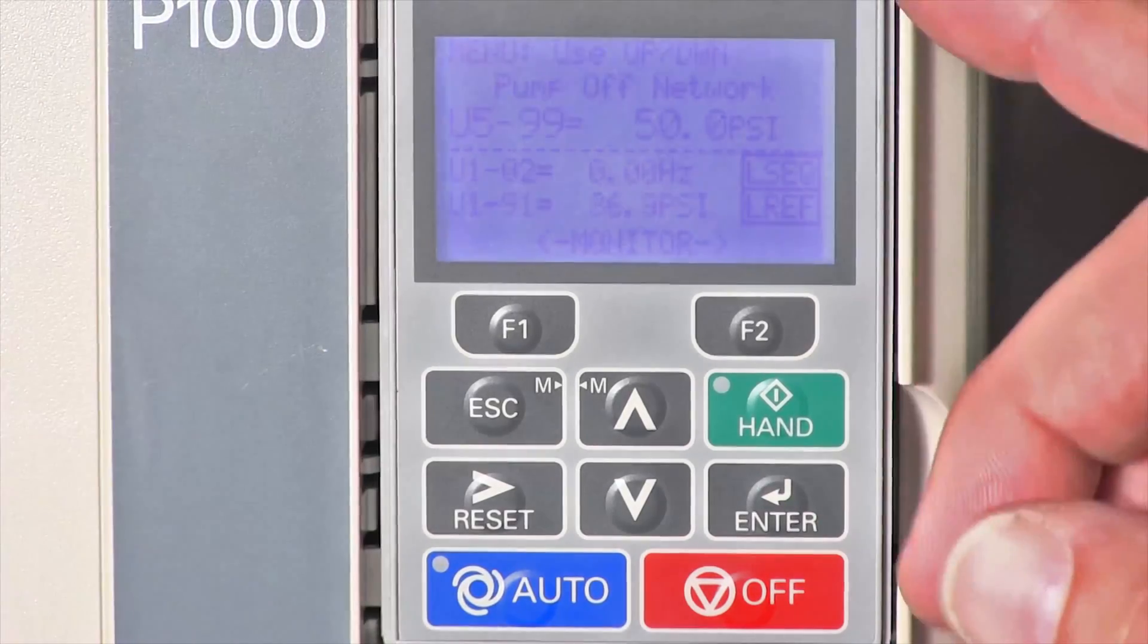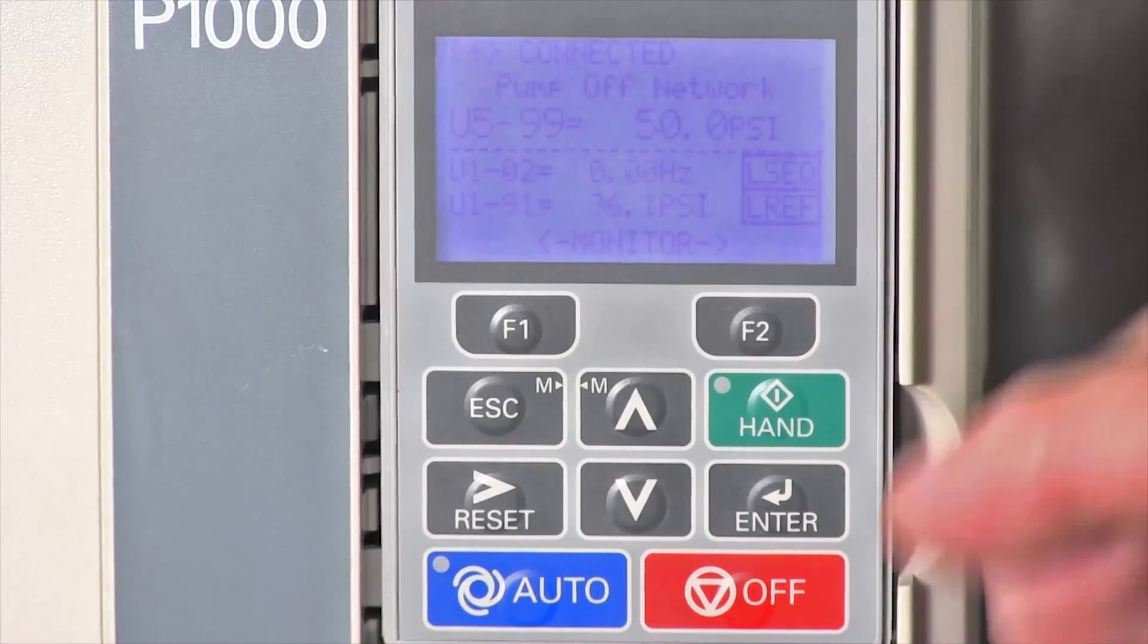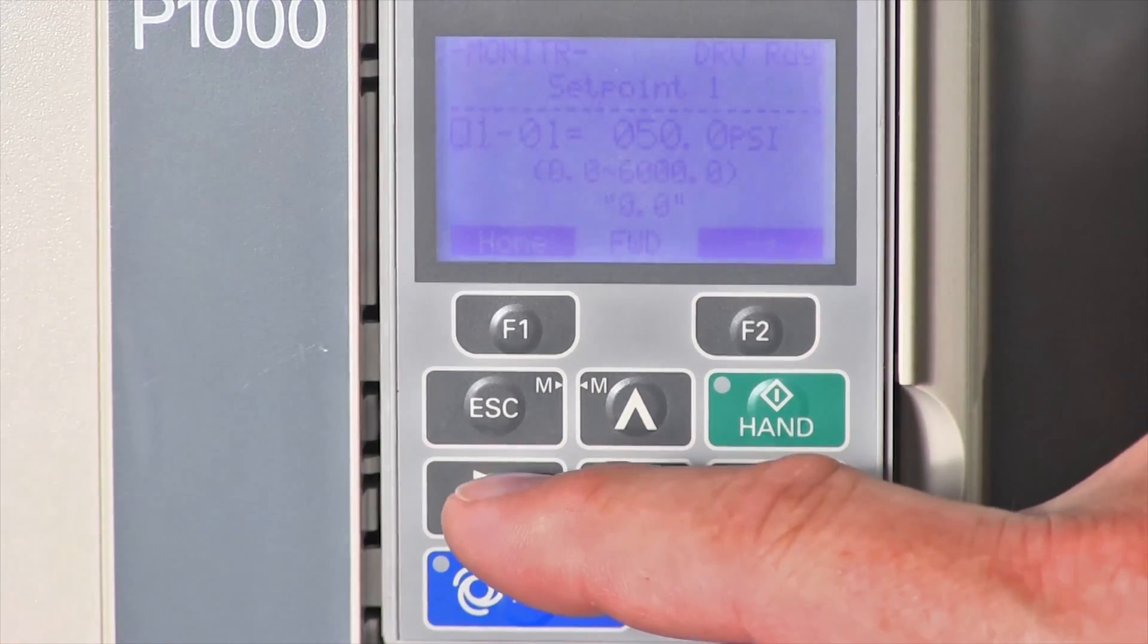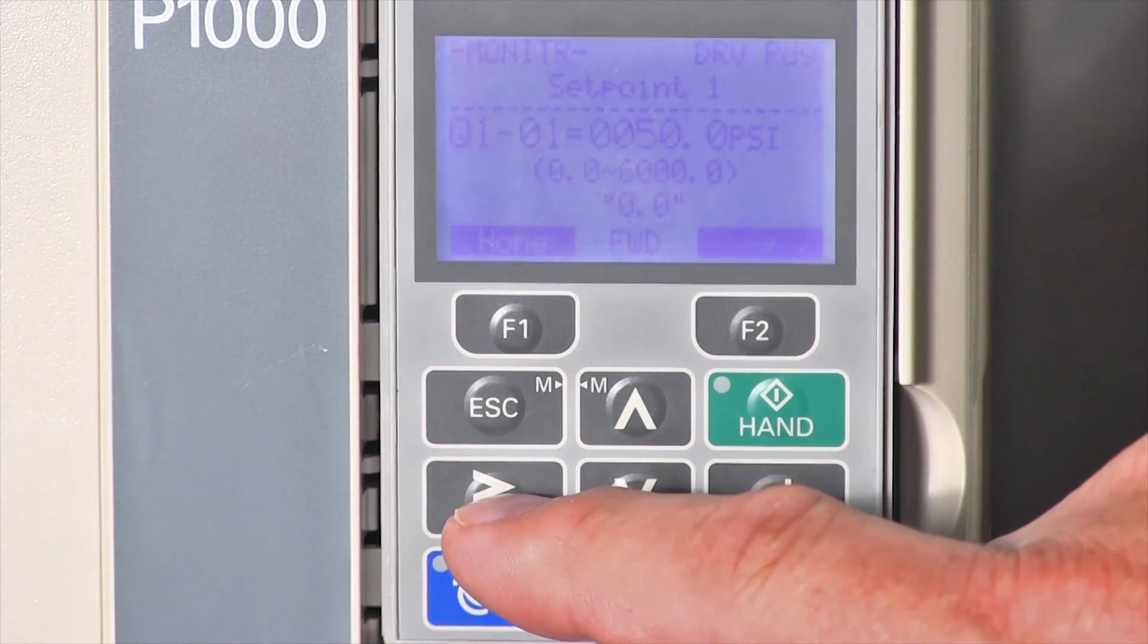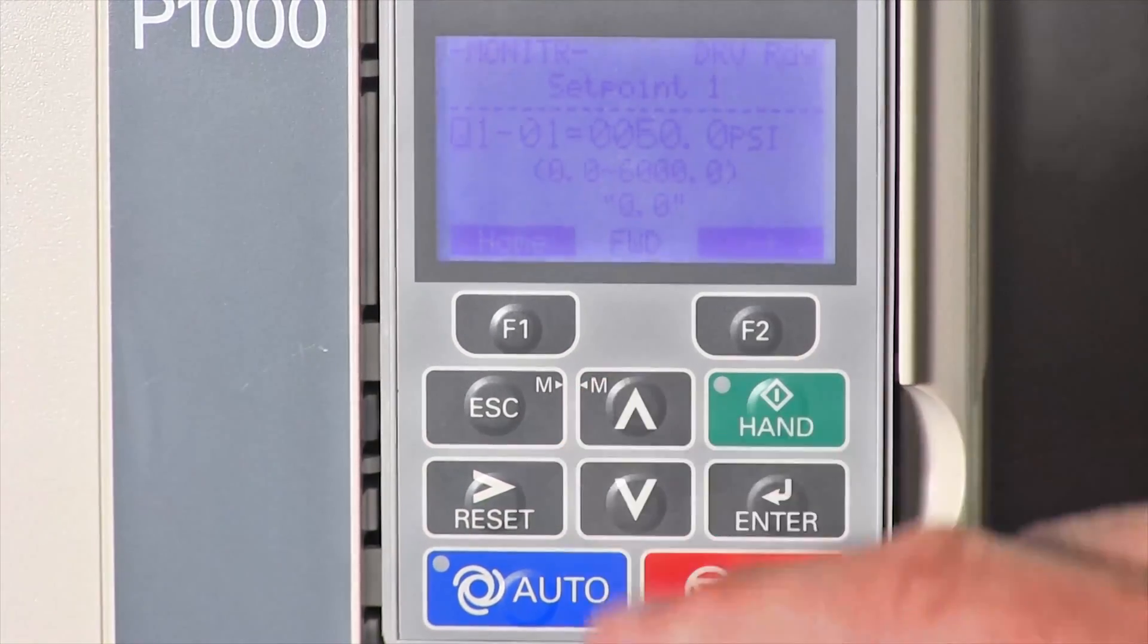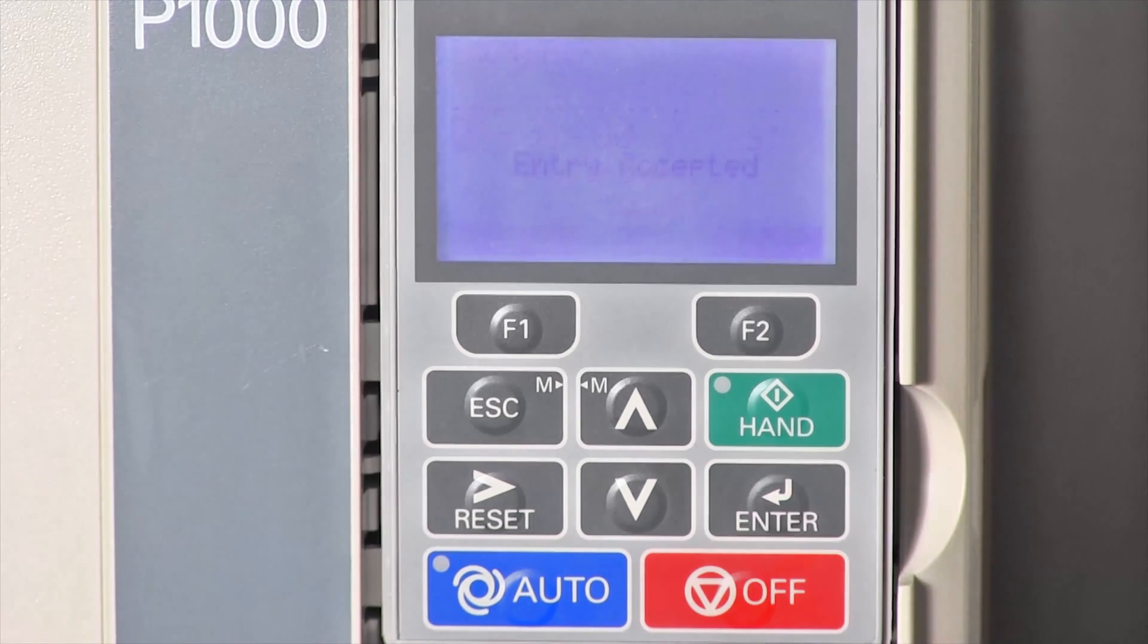The boosters arrive with a set point at 50 PSI. To change this, simply press enter, use the arrow over button, move to the tens column, or in this case to 5 and 50, and then use the arrow up or down to change. In this case, we want to change it to 60, and then when we're done, we'll press enter.